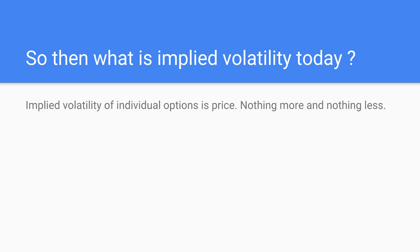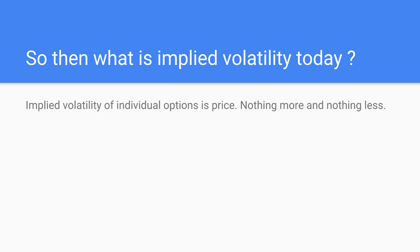So what is implied volatility of individual options today? The answer — possibly controversial — is that it is simply price. Nothing more, nothing less. When an option shows 8% implied volatility, it just means the option is priced at 8% — it's a different way to express price instead of saying three dollars. That's why every SPX option has a different implied volatility: because every option has a different price.